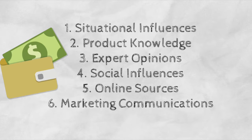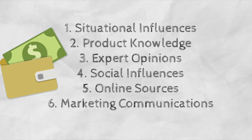The type of criteria that consumers consider when making a decision depends heavily on situational influences. For example, if a product is being purchased as a gift, the buyer may pay close attention to hedonic attributes. Product knowledge is also important. If a consumer is already very informed on a product, they will not have to seek out other people's opinions. For example, a college basketball player would be able to quickly discern what information about athletic shoe use is important.